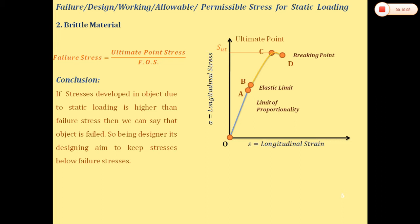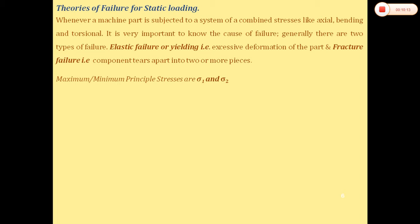After deciding the design stress, we use theories of failure for static loading. When a machine part is subjected to combined stresses — axial, bending, and torsional — it is important to know the cause of failure. There are two types: elastic failure or yielding, meaning excessive deformation beyond the elastic zone into the plastic zone; and fracture failure, where the component tears apart into two or more pieces.